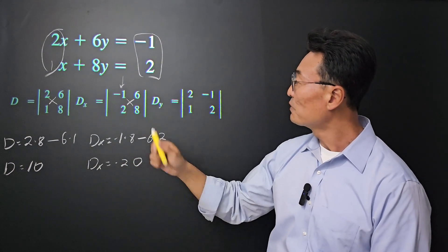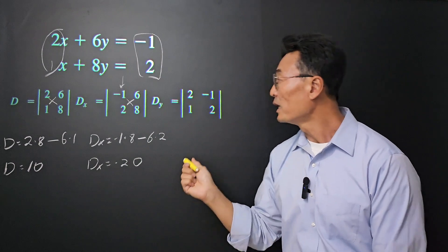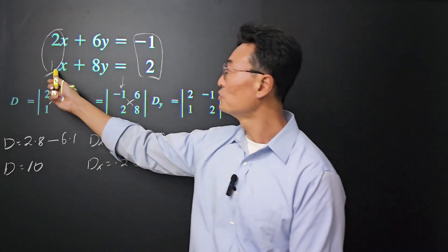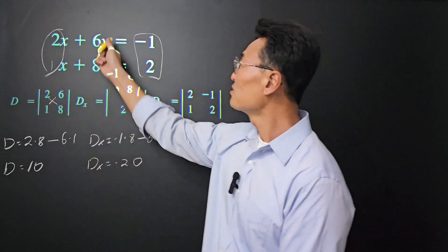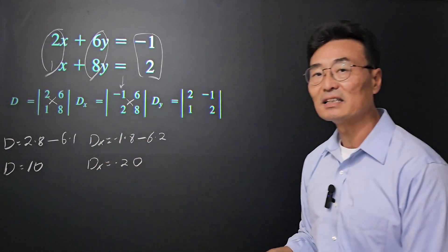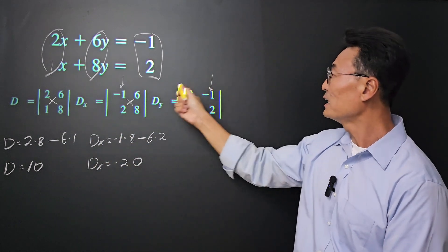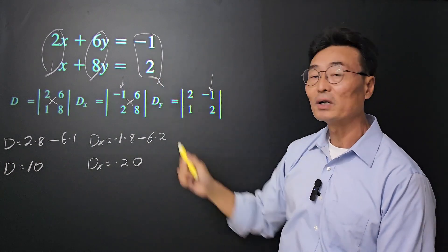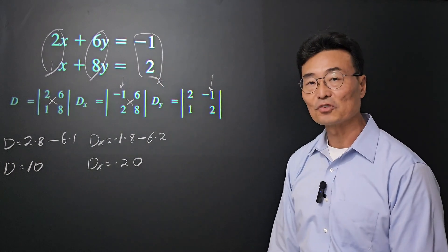Next, we need to find Dy. For Dy, we leave the first column alone with the 2 and the 1. This time, we remove the 6 and the 8 and plug in the negative 1 and the 2 from the right side of the equal sign.